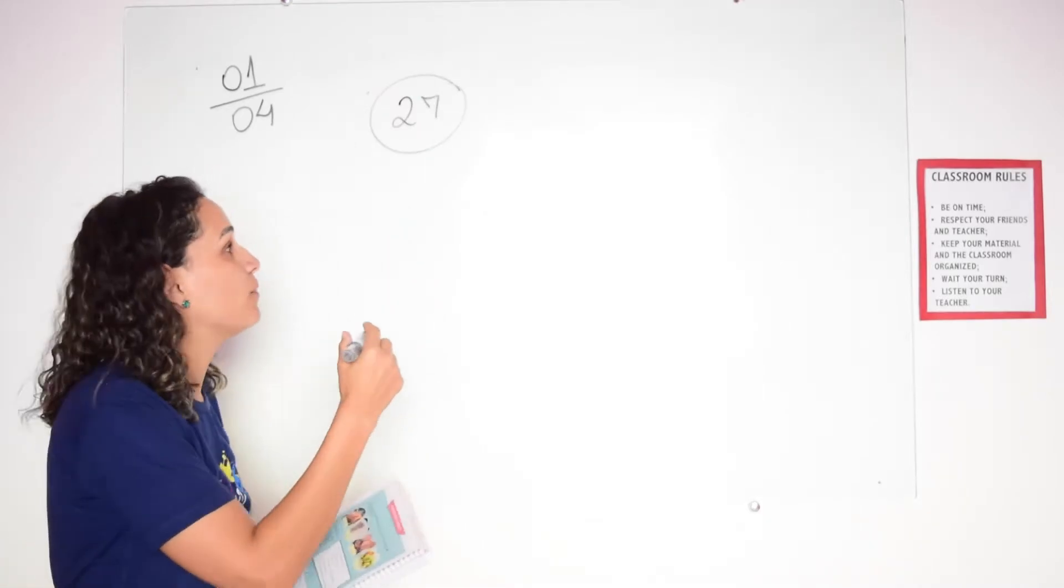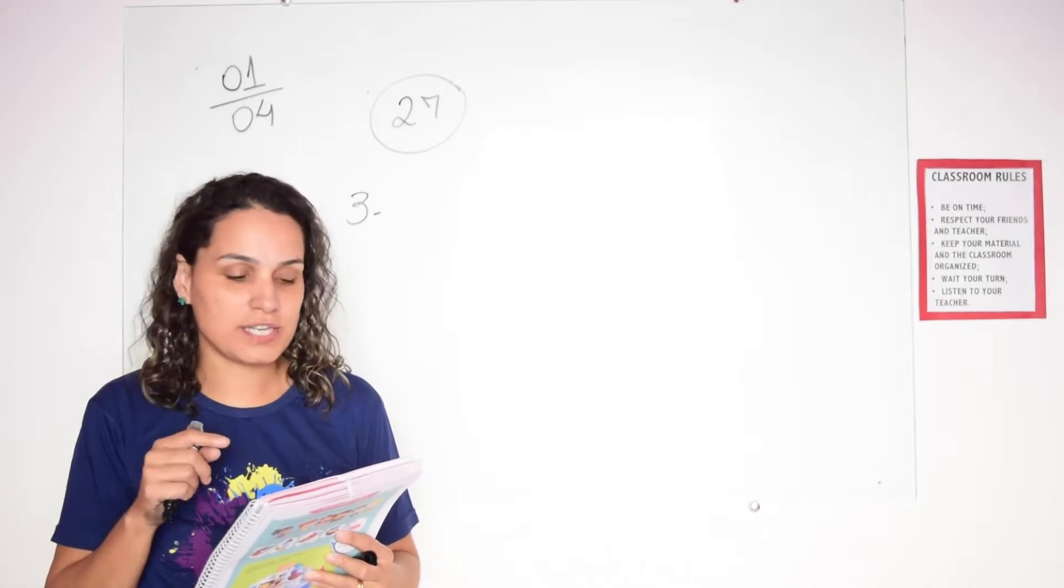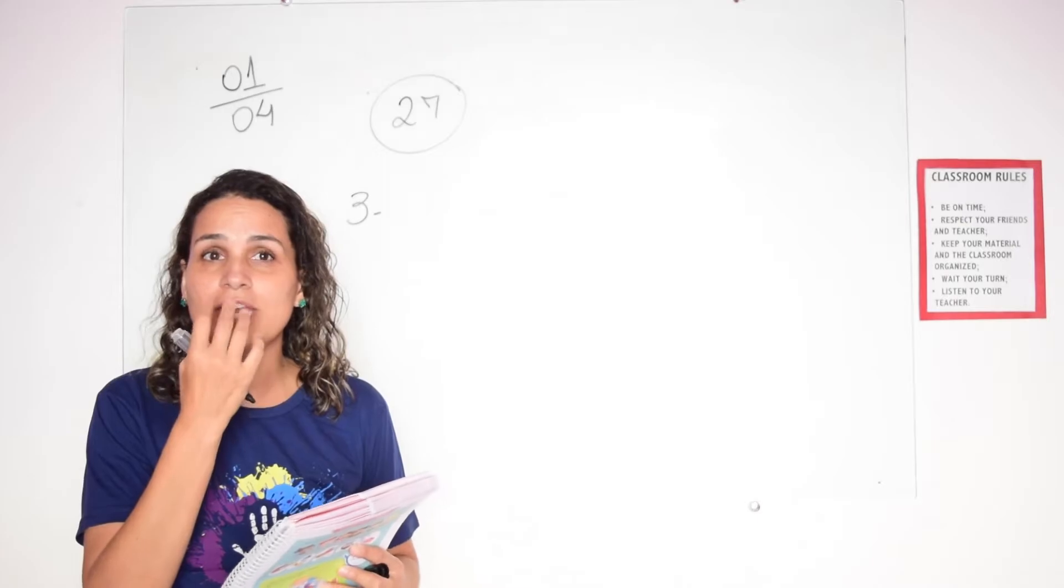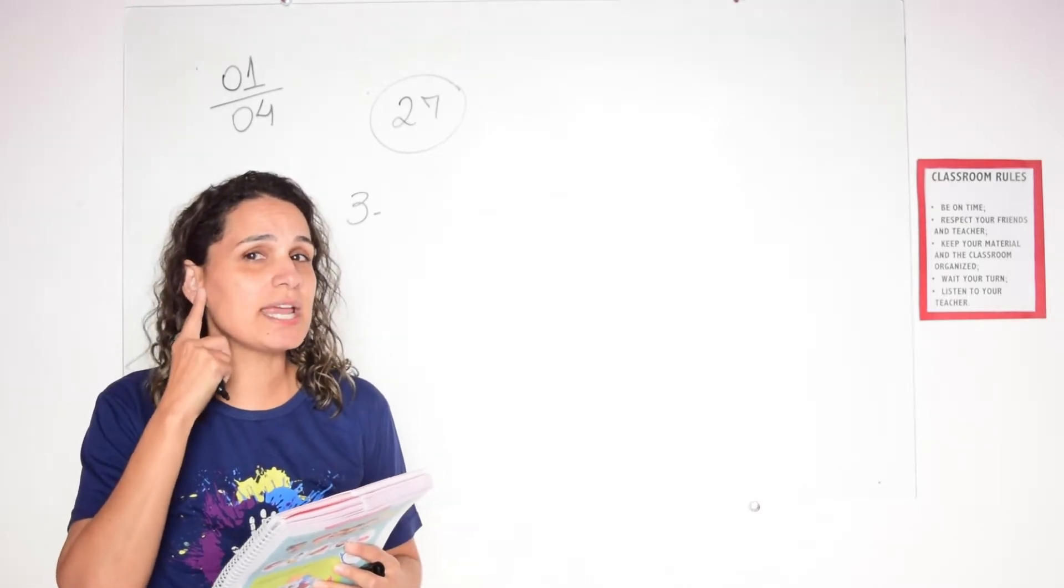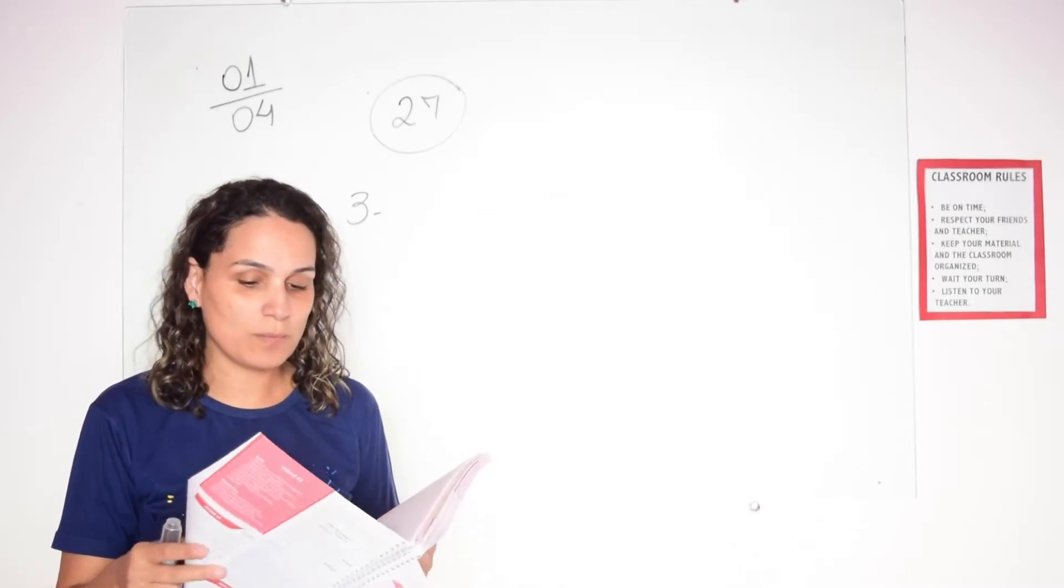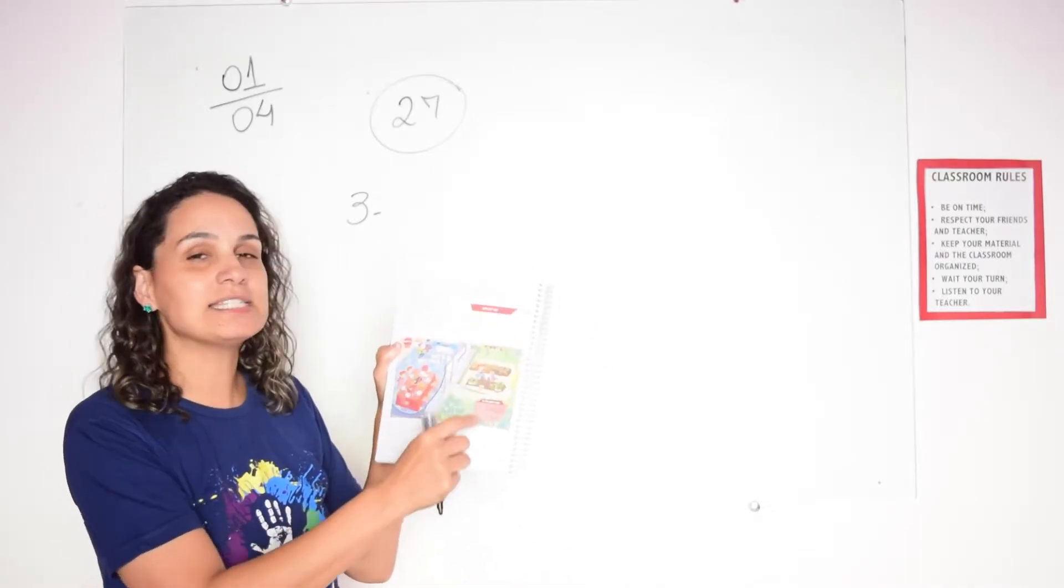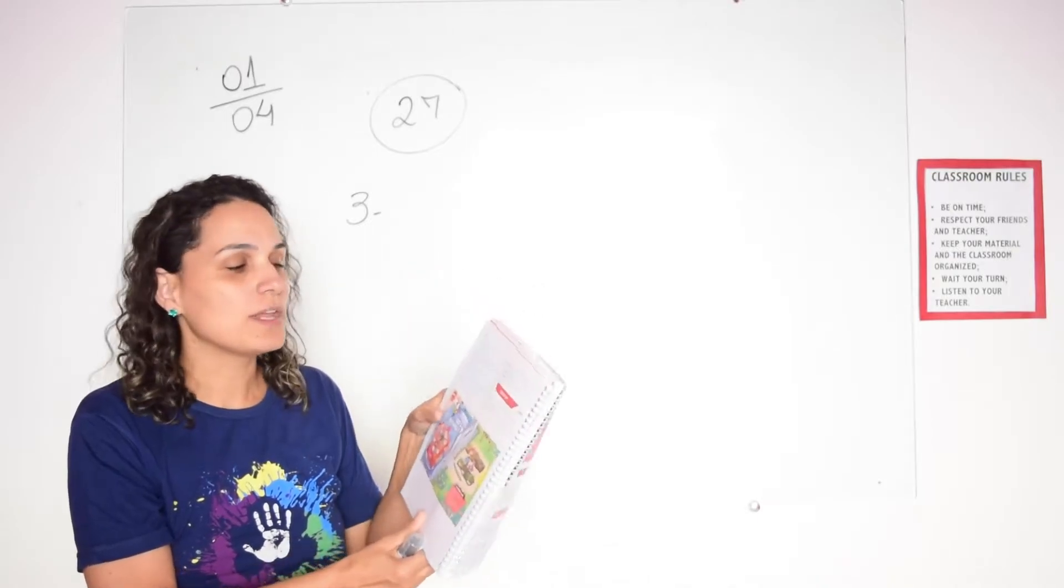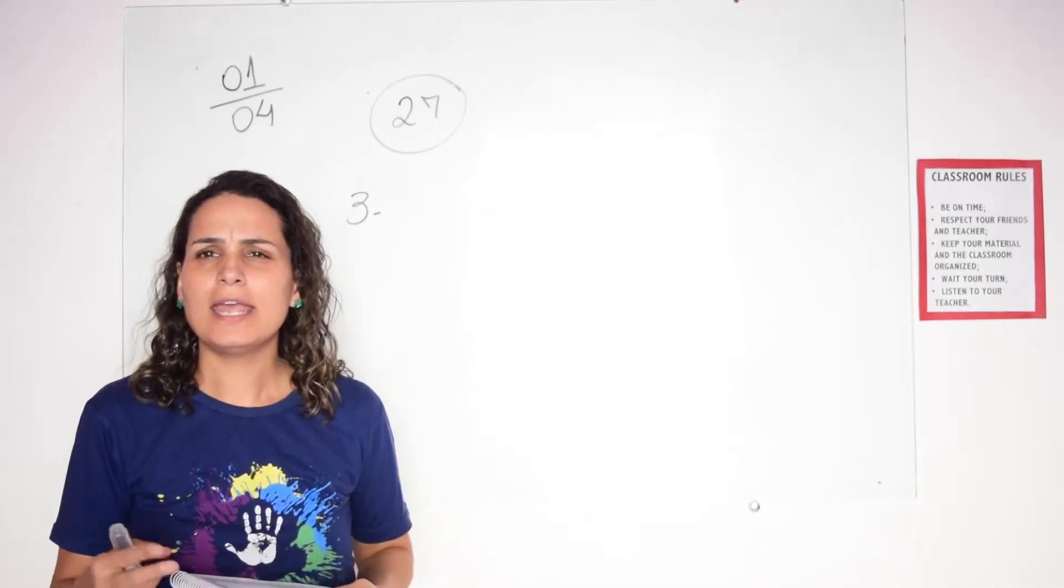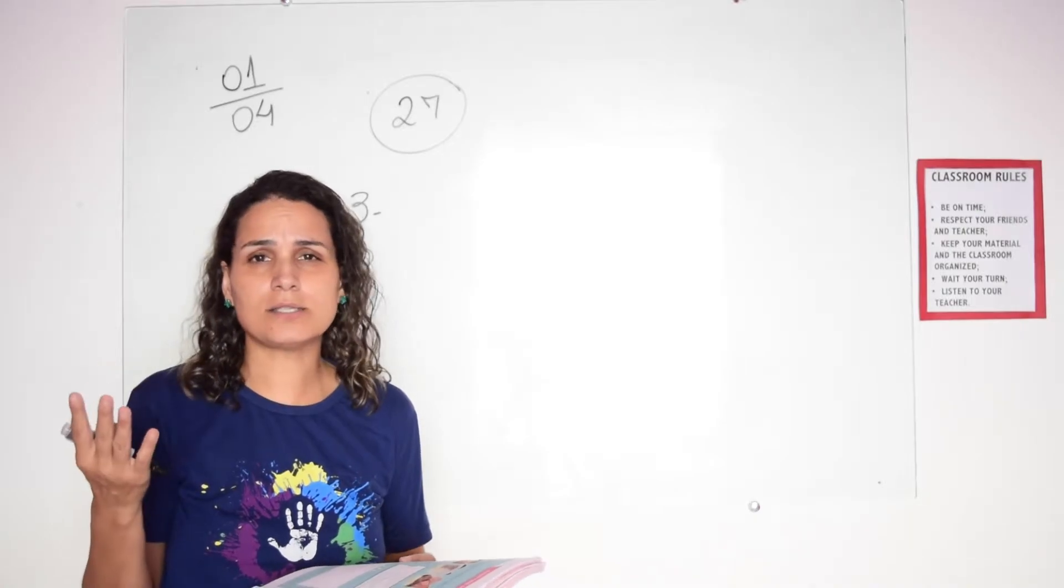Activity number 3: you are going to listen to a conversation between David's family and Lisa. They are eating lunch and you are going to listen to the conversation. Lembram da historinha que vocês viram? Que a family do David chama a Lisa para almoçar com eles? Vocês irão ouvir no momento que eles começam a almoçar. What are they eating? O que eles estão comendo?